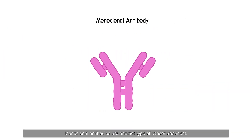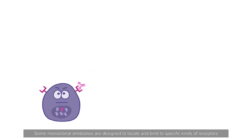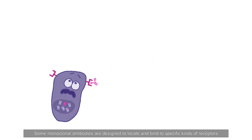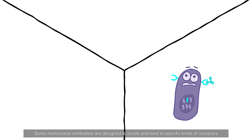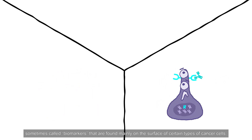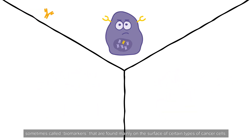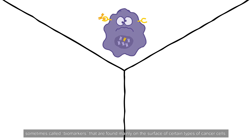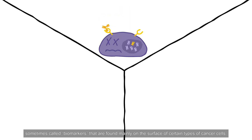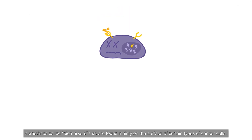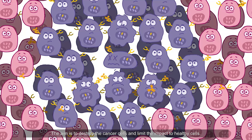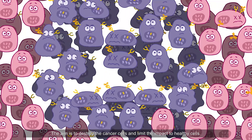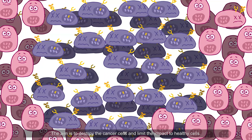Monoclonal antibodies are another type of cancer treatment. Some monoclonal antibodies are designed to locate and bind to specific kinds of receptors, sometimes called biomarkers, that are found mainly on the surface of certain types of cancer cells. The aim is to destroy the cancer cells and limit the impact to healthy cells.